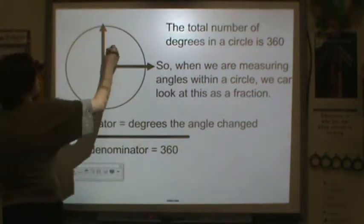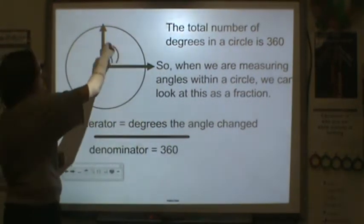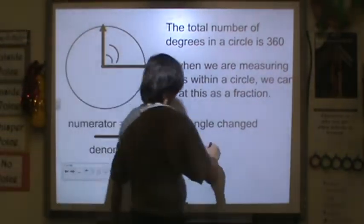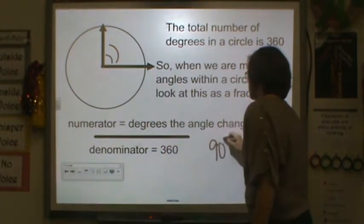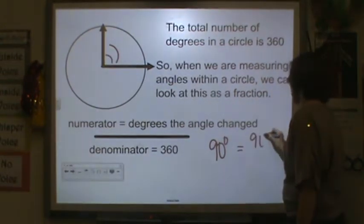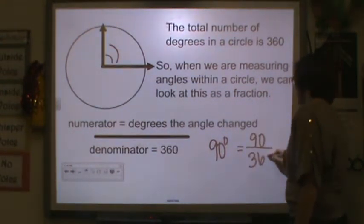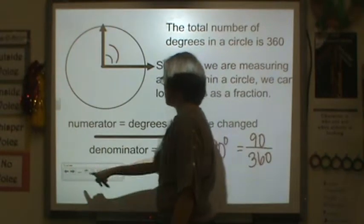Now let's look at this one. We know this is a right angle. So we have 90 degrees within this circle. To write this as a fraction, it would be 90 out of 360 total degrees.